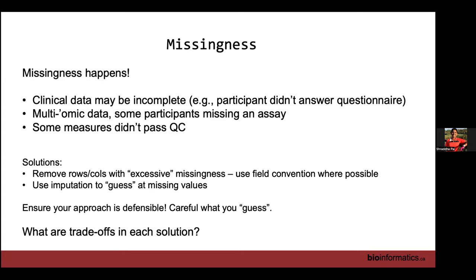There are ways to do missingness visualization in R. What do you do about missing data? One thing you could do is exclude samples — if somebody is missing more than 80% of their data, just exclude it. If a patient is missing their core phenotype outcome data, you've got to take that sample out. But you make the decision — you don't let the software decide for you. There's also a technique called imputation that allows you to guess at the missing values, but use it with caution. Proceed with caution and think about the trade-offs in each situation.